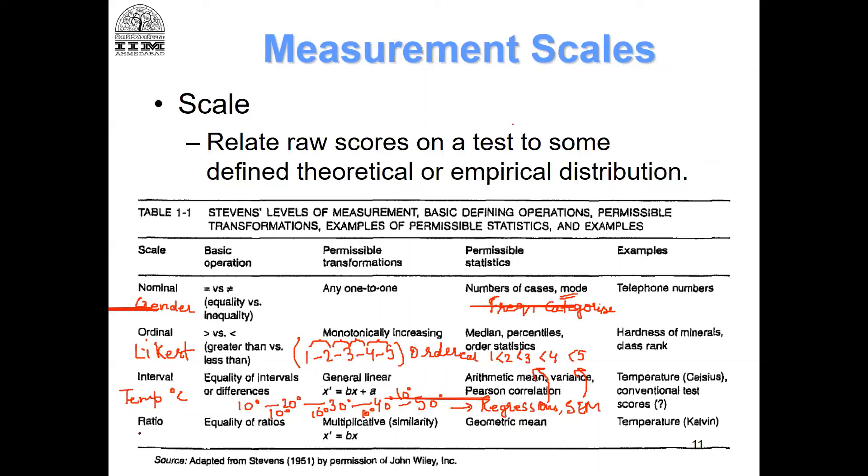The last one is ratio. In ratio, it is the same as interval, but you can also take ratios. That means I can say twenty divided by ten, the ratio is two. That means twenty degrees is twice as hot as ten degrees, and forty degrees is twice as hot as twenty degrees.